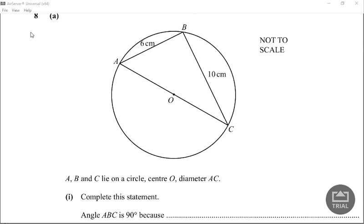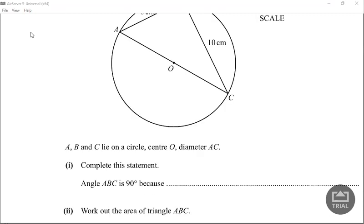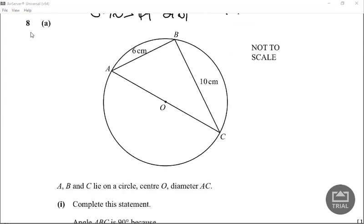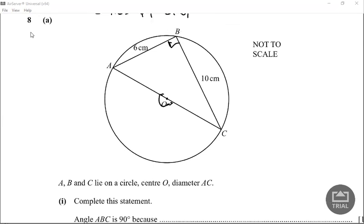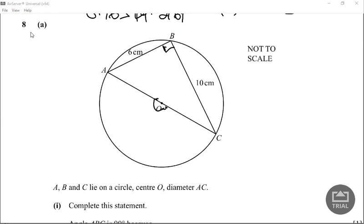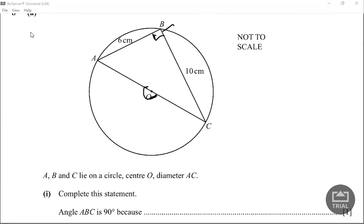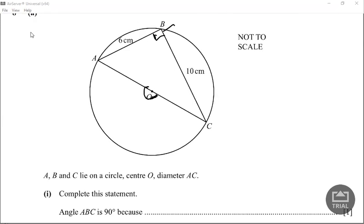Complete this statement: angle ABC, which is this one, is 90 degrees because... One of the reasons could be angle at the circumference is half the angle at the diameter. Or it could be it is angle within a semicircle equal 90 degrees. So that's one of the rules.